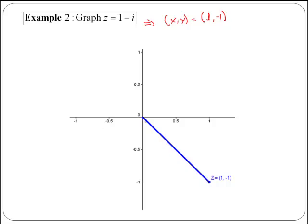The following example asks us to graph 1 - i. This time we graph the point (x, y) = (1, -1), and as you can see, this complex number is in the fourth quadrant.